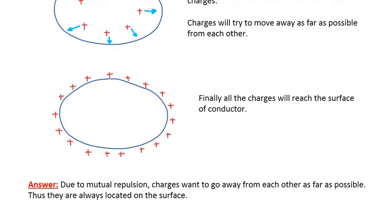So the final answer to this question is that due to mutual repulsion, charges want to go away from each other as far as possible, thus they are always located on the surface. If any metal conductor is given a charge, the charge can never stay in the interior portion of the metal; it will always stay on the outer surface. Peace.